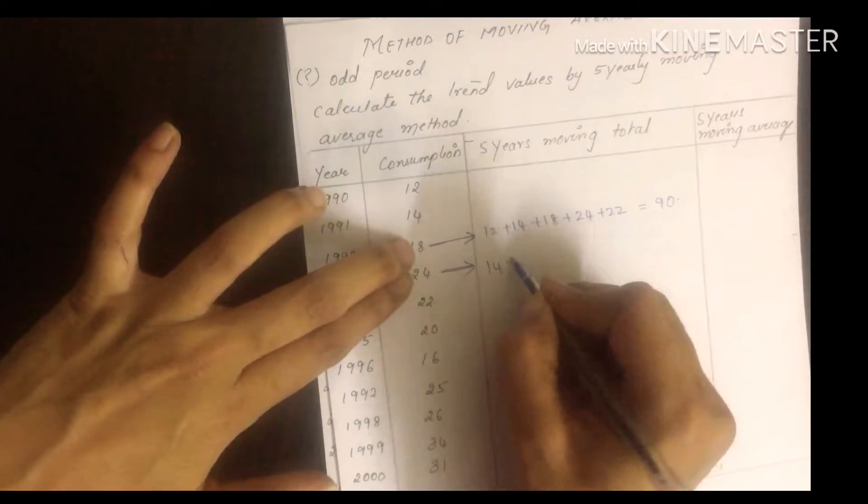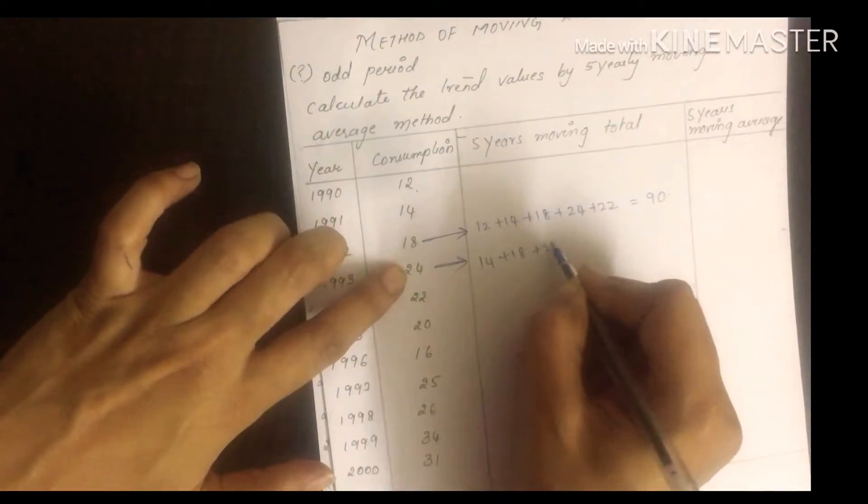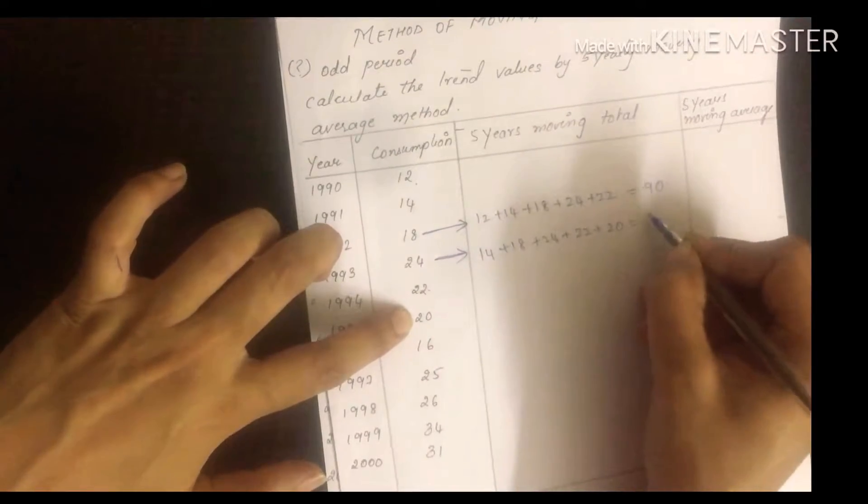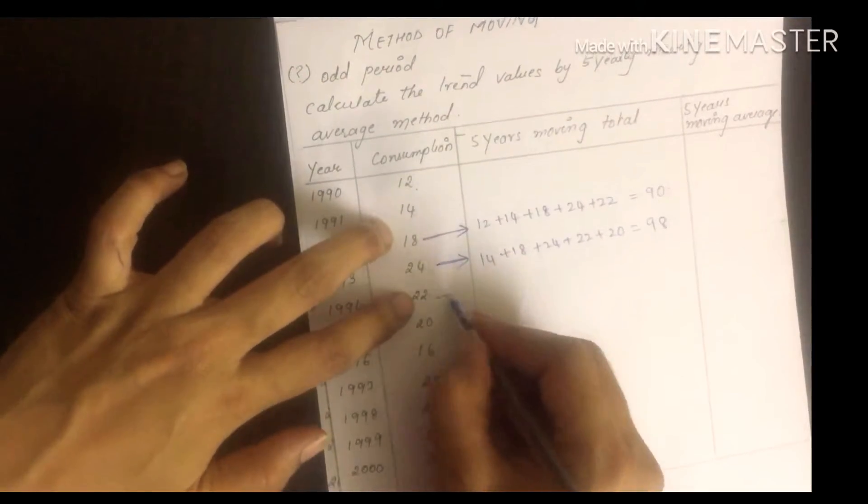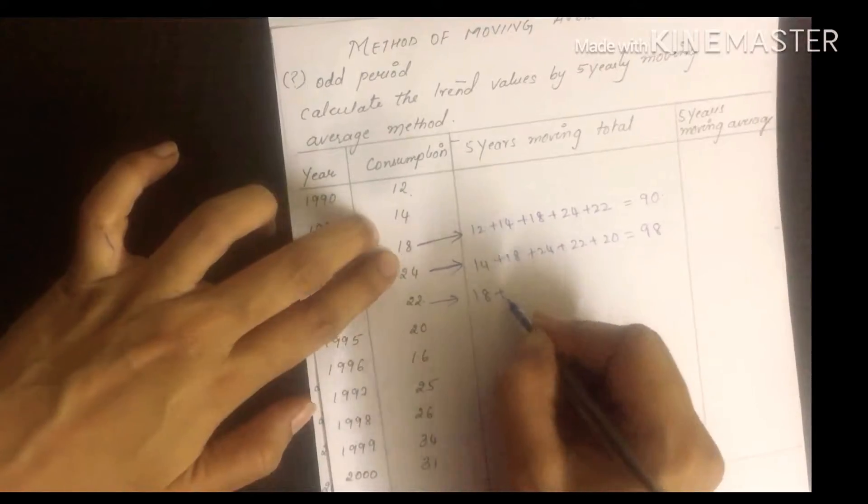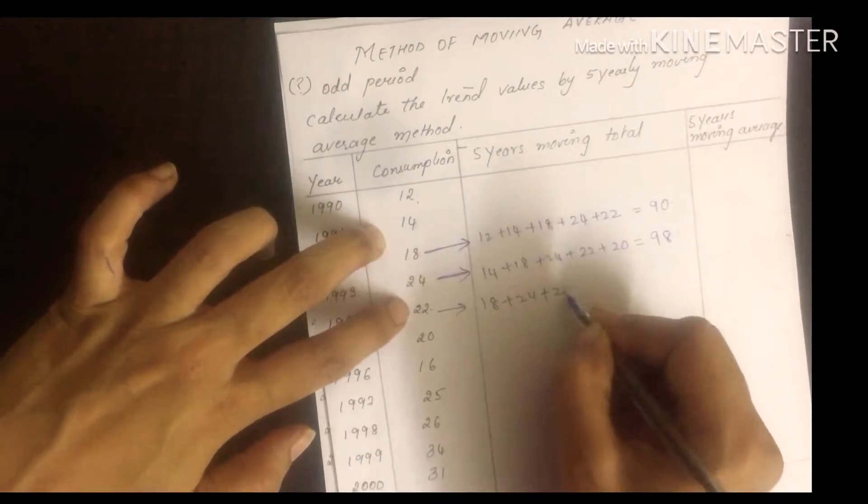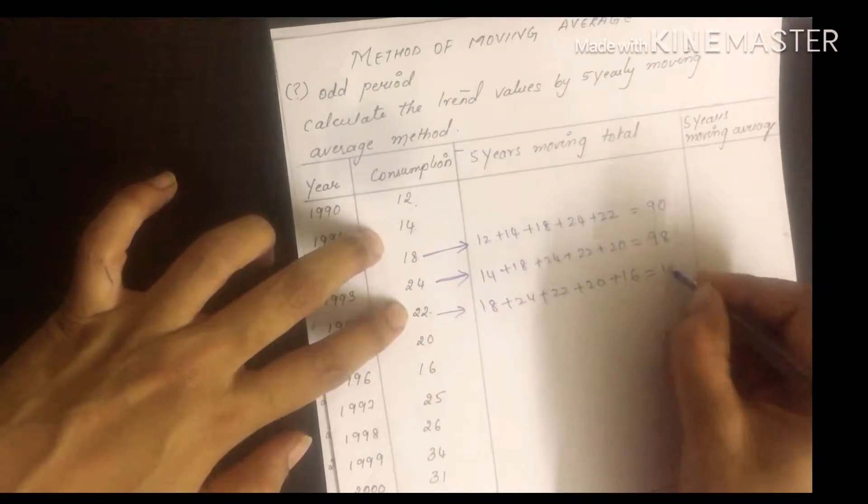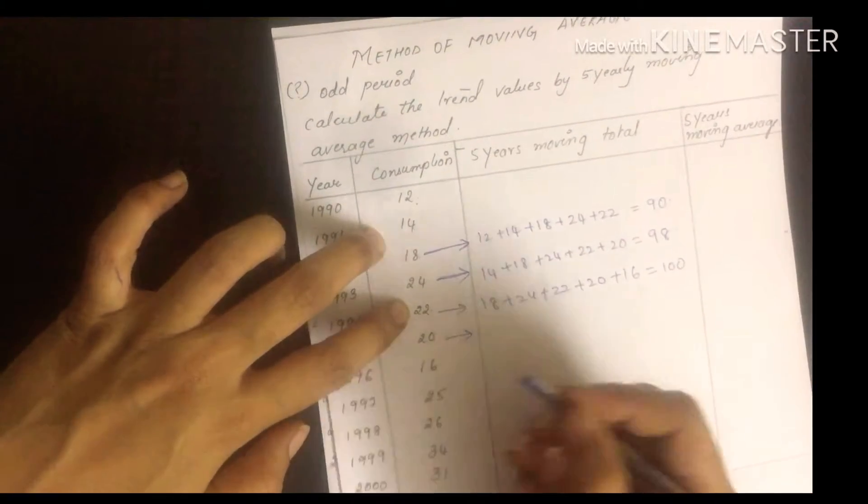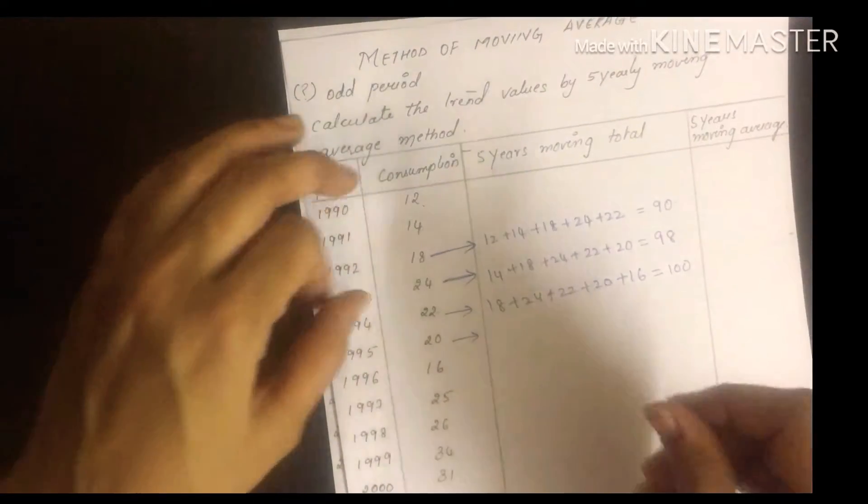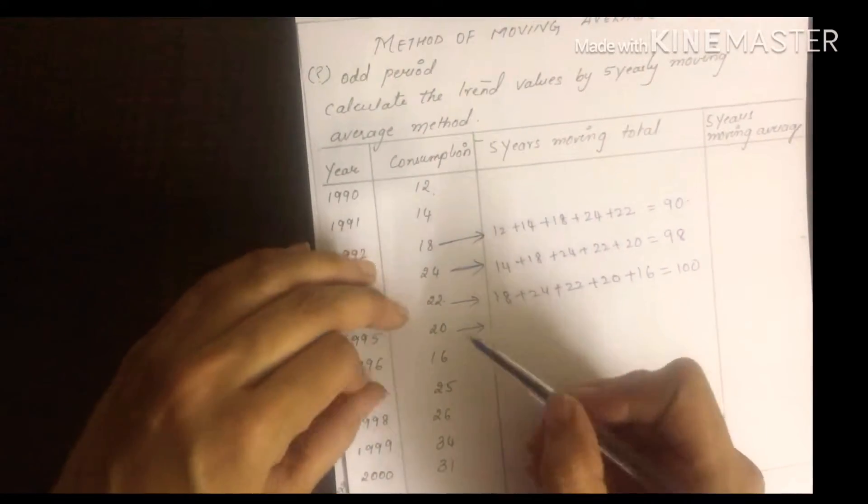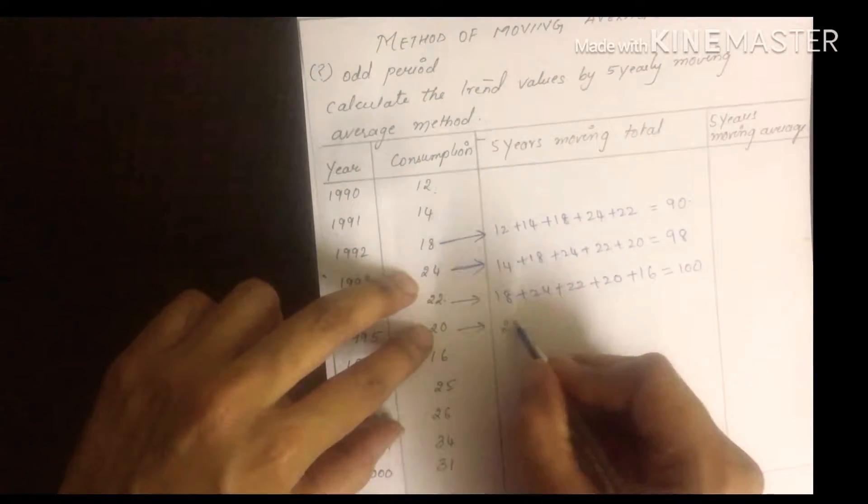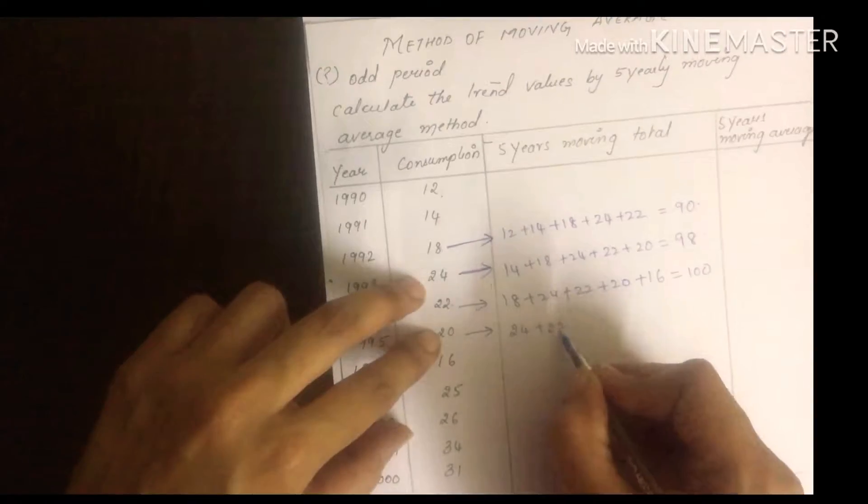Next, 24 is your center. So above 2 years and below 2 years. Basically 14 plus 18 plus 24 plus 22 plus 20 equals 98. For this, 18, 24, 22 - that's 100. This is one of the simplest problems on moving average but an important question. They'll ask you this in long answer. Maximum 4 years will be asked in long answer. 5 years or 3 years will come as short questions.